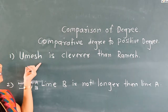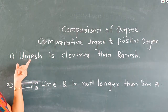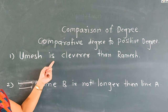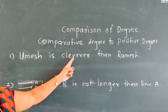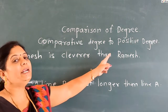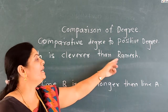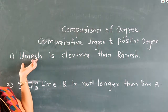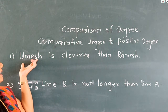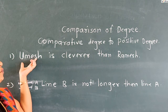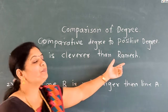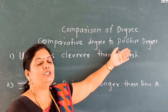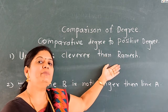Look here. This is a sentence: Umesh is cleverer than Ramesh. We have two subjects: Umesh and Ramesh.